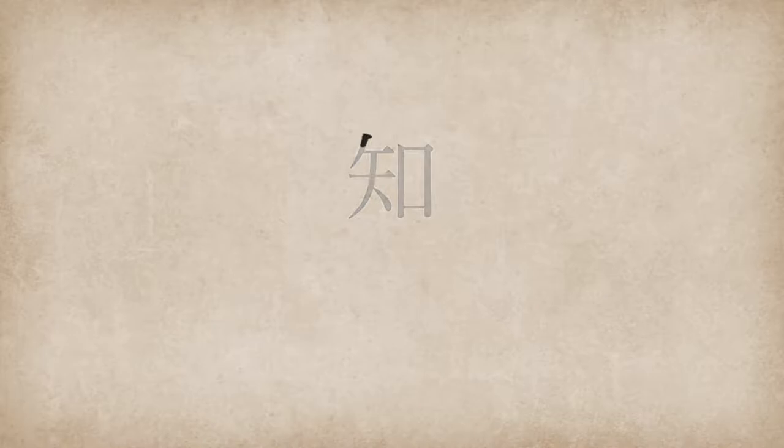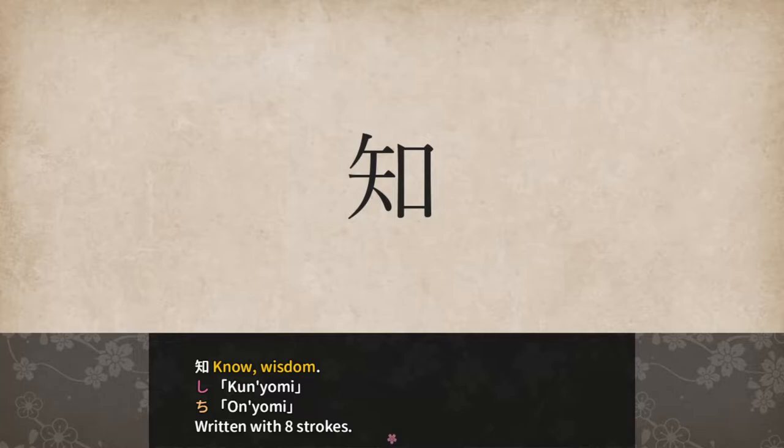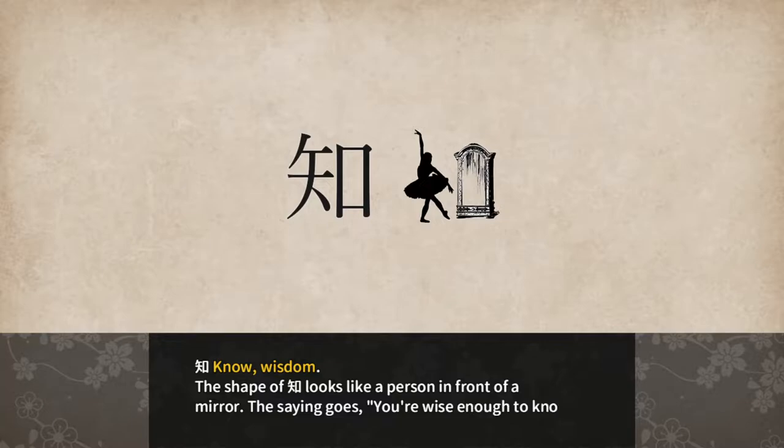Shi. Know or wisdom. Shi for kunyomi and chi for onyomi, written with 8 strokes. The shape of chi looks like a person in front of a mirror. The saying goes, you're wise enough to know what you'll see in the mirror.